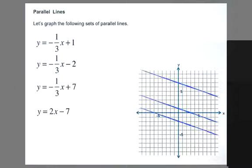y = -1/3x + 7 is also parallel. y = 2x - 7 is not parallel to these, but y = 2x - 1 is parallel to y = 2x - 7, and so is y = 2x + 9.